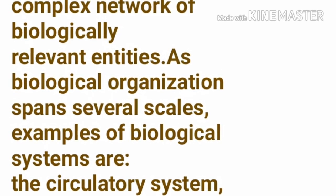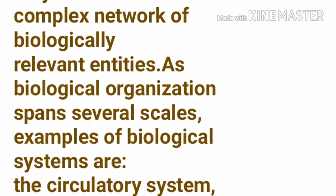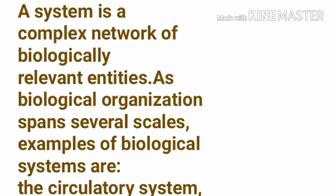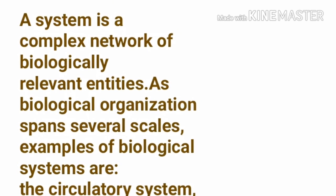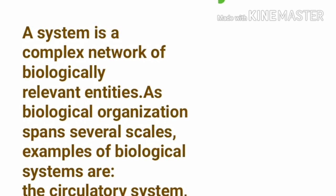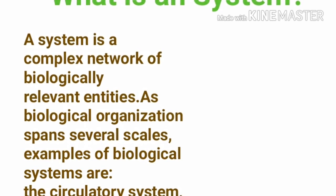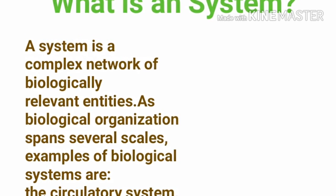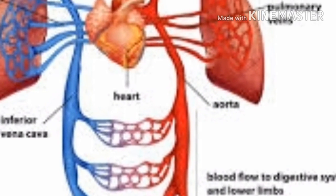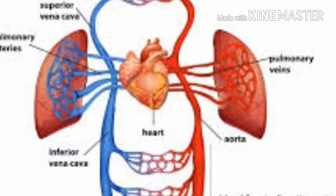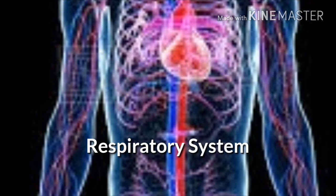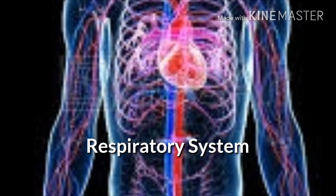Lastly, we have the organ system, or biological system, which comprises different organs performing functions within the body. It is also a complex network of biologically relevant entities, as biological organization spans several levels. Examples of biological systems are the circulatory system, the respiratory system, and many more.